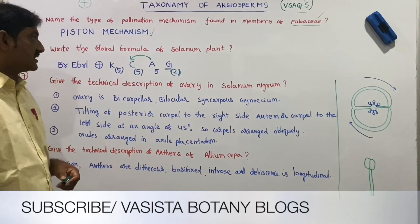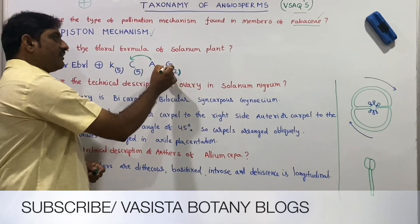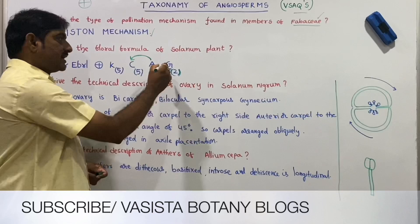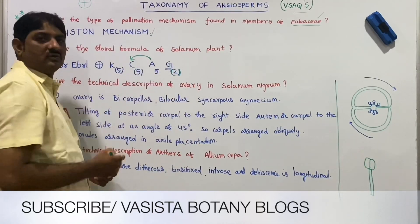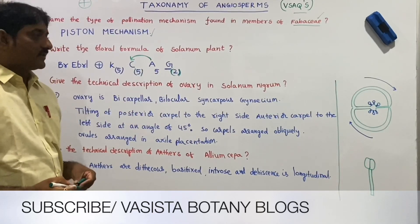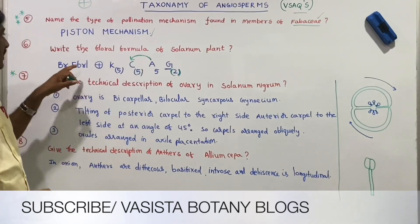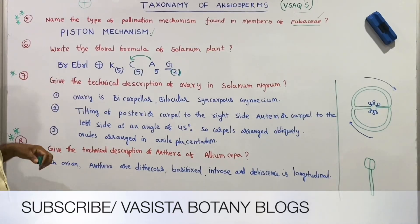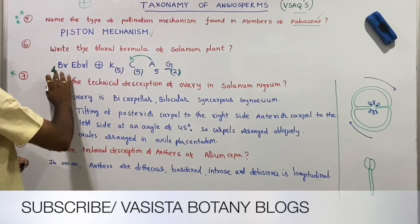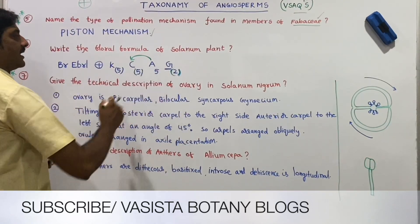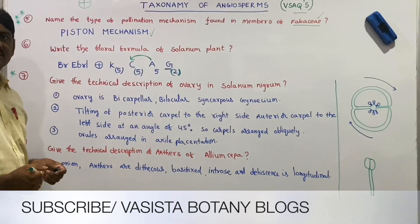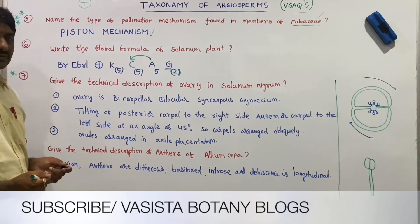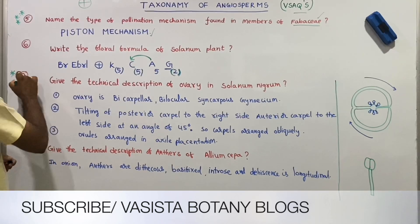The ovary is superior — syncarpous condition with a superior ovary. G (gynoecium) is written with a line below it to indicate superior ovary. The gynoecium has carpels in a superior ovary condition.